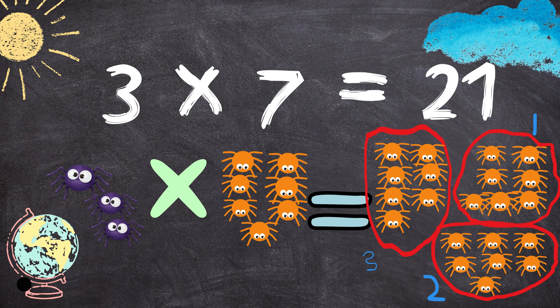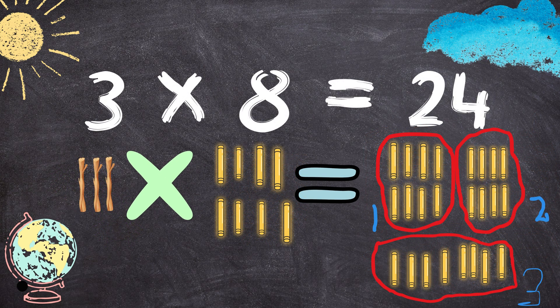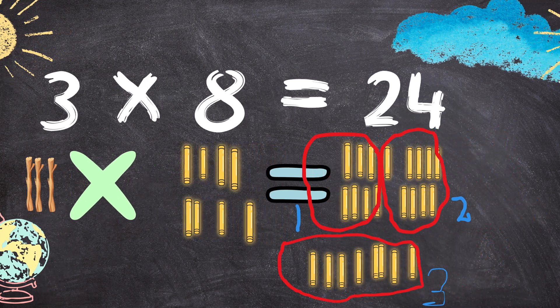Three times eight equals to twenty-four. Three sticks multiplied by eight sticks equals to twenty-four sticks.